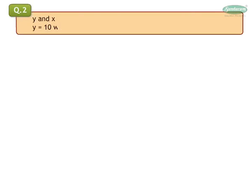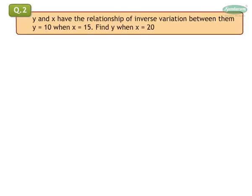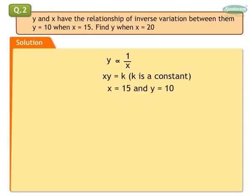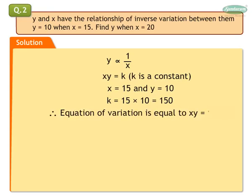Question 2: Y and X have the relationship of inverse variation between them. Y is equal to 10 when X is equal to 15. Find Y when X is equal to 20. Solution: We express the inverse variation symbolically. Hence, we get XY is equal to K, where K is a constant of variation. Substituting X is equal to 15 and Y is equal to 10, we get K as 15 into 10, which is equal to 150. Therefore, the equation of variation is XY is equal to 150.